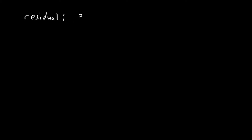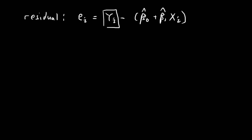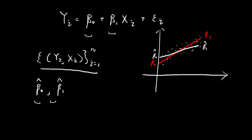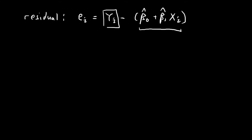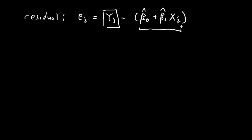In order to find the best estimate, I'm going to define a term called the residual. The residual of the ith data point is equal to yi minus (beta0-hat plus beta1-hat times xi). This term represents the true value of the data point, and this term represents the values that lie on the estimated straight line. We'll use the symbol yi-hat to represent this predicted value, so we can rewrite the residual as yi minus yi-hat.